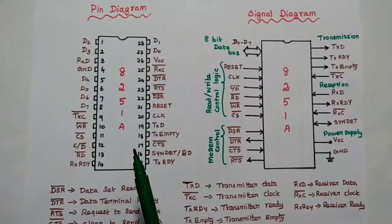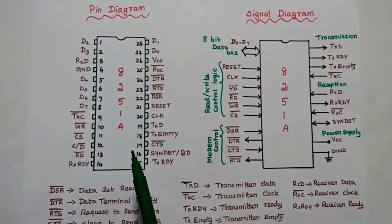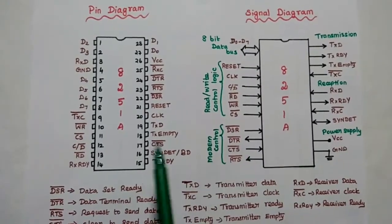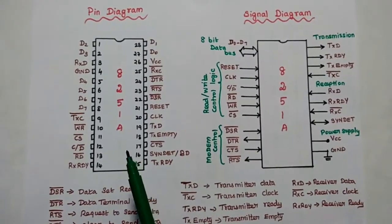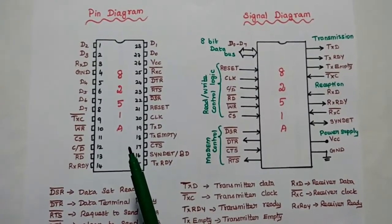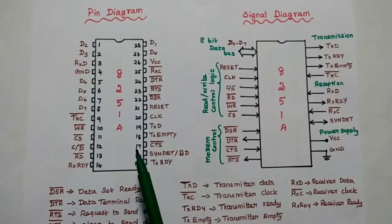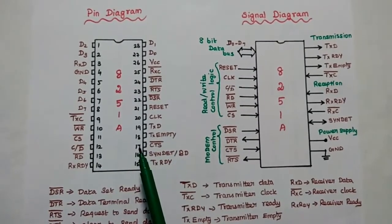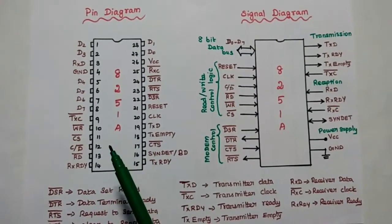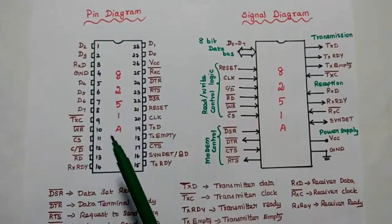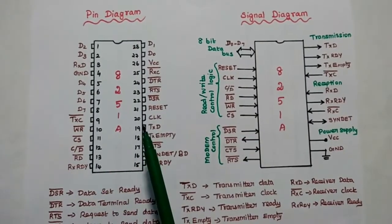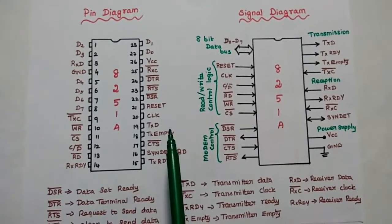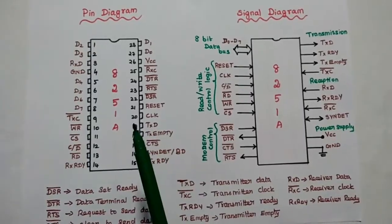This is the pin diagram of 8251A — this is the signal diagram. As we know, it is available as a 28-pin dual inline package chip. On the left-hand side there are 14 pins, and on the right-hand side there are 14 pins, totaling 28 pins.